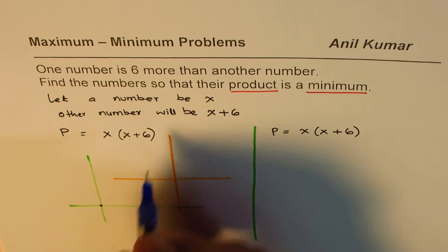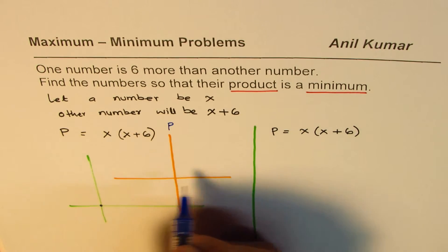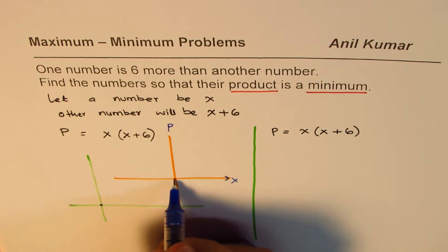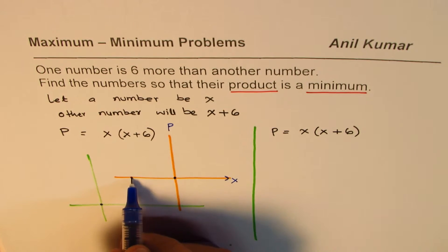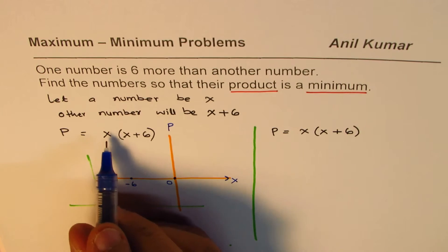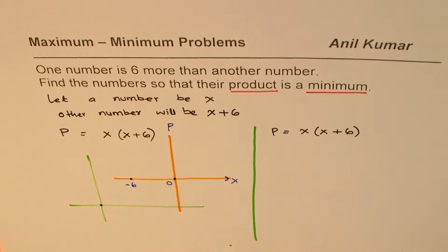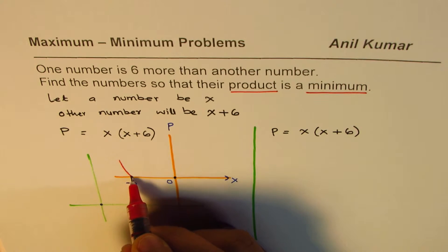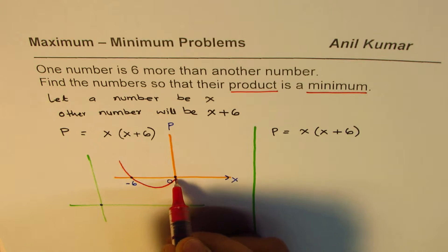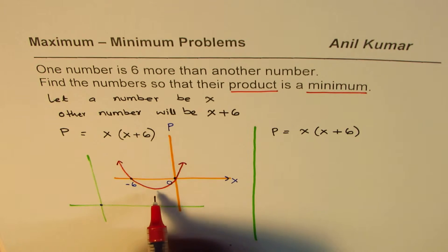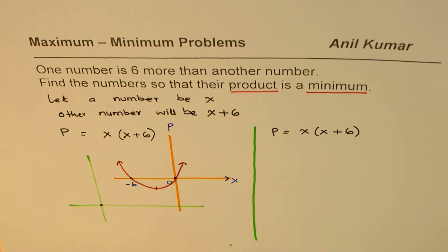So we'll make a bigger arm. Let's say this is the product and this is our number X. It is zero for zero, and this one is zero for minus six. So these are my two zeros. Parabola is opening upwards, so what I will do is I'll just draw a curve which goes through these points, and that becomes a parabola. We are looking for minimum. Where is the minimum? Minimum is right in the middle. Do you see that?